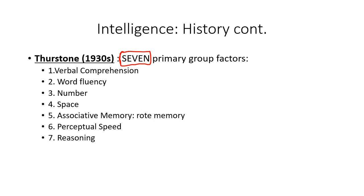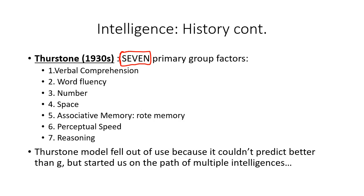Today we pretty much follow Spearman's G with some exceptions, because Thurston's model couldn't predict intelligence better than G. It did start us on the path of multiple intelligences, but Thurston's seven are not followed by anyone today. Interestingly, at the end of Thurston's career he said Spearman was right, and at the end of Spearman's career he said Thurston was right — so by the end they had made up and were basically saying the other one was correct.